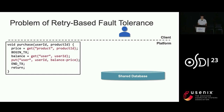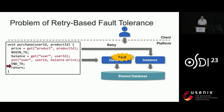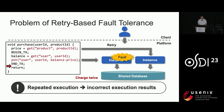Platforms usually use a retry-based fault tolerance mechanism. If the execution of a function fails, the platform will directly retry it. However, retry will result in incorrect execution results. For example, this function 'purchase' first reads the price from the database and reduces the balance. Assume that the first execution successfully reduces the balance and then fails. Then the platform will retry it and reduce the balance again, resulting in incorrect execution results.